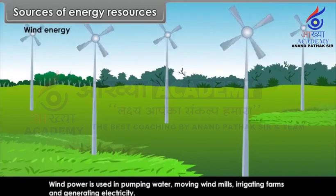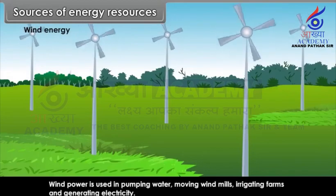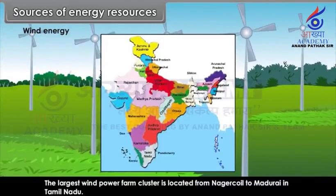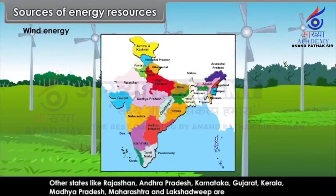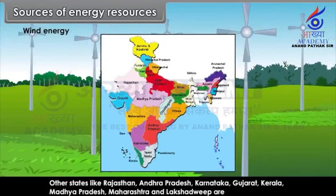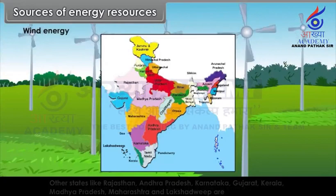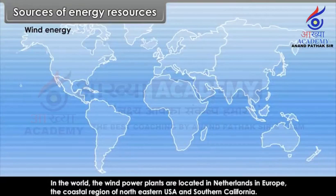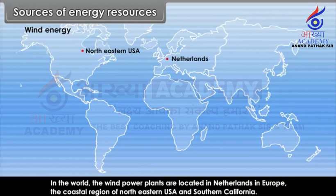Wind energy. Wind power is used in pumping water, moving windmills, irrigating farms and generating electricity. The largest wind power cluster is located from Nagar Koyal to Madurai in Tamil Nadu. Other states like Rajasthan, Andhra Pradesh, Karnataka, Gujarat, Kerala, Madhya Pradesh, Maharashtra and Lakshadweep are better placed from the point of view of wind energy. In the world, wind power plants are located in the Netherlands in Europe, the coastal region of northeastern USA and southern California.